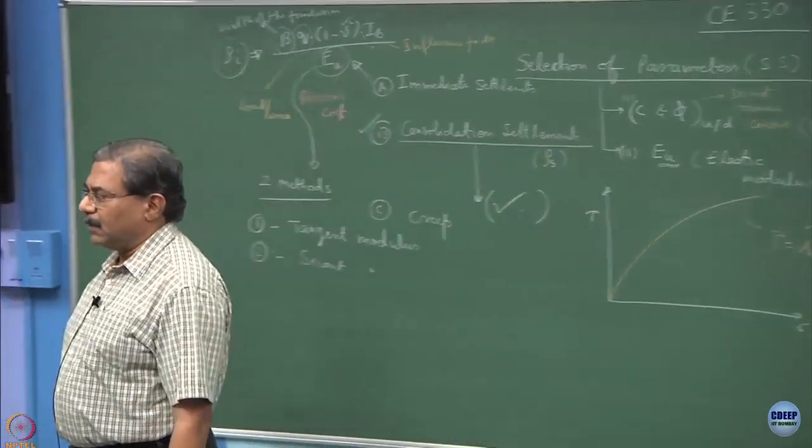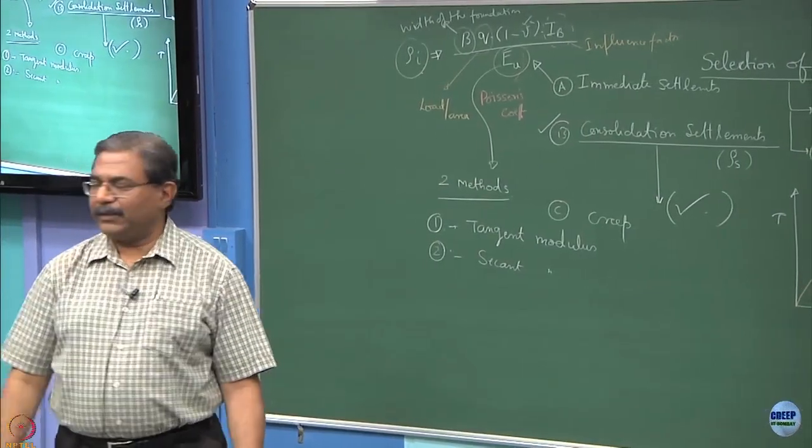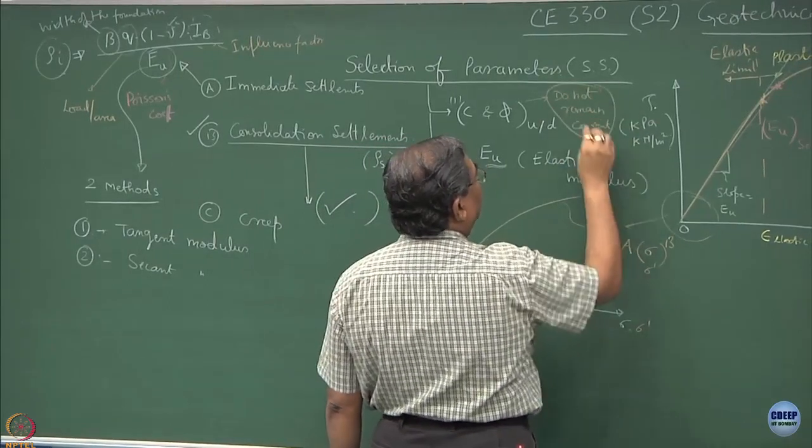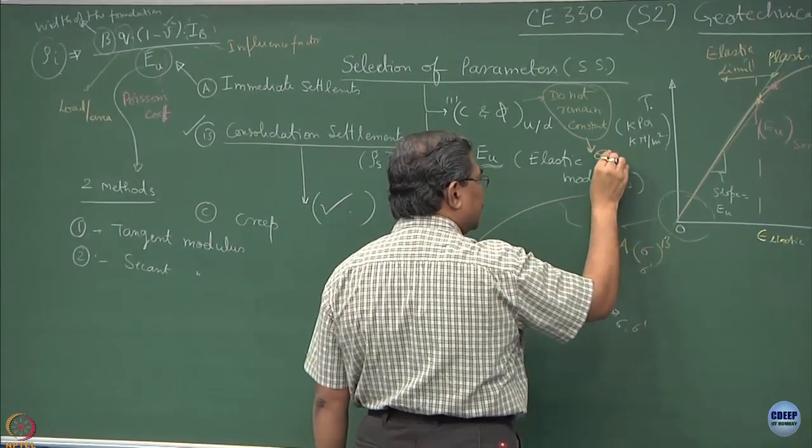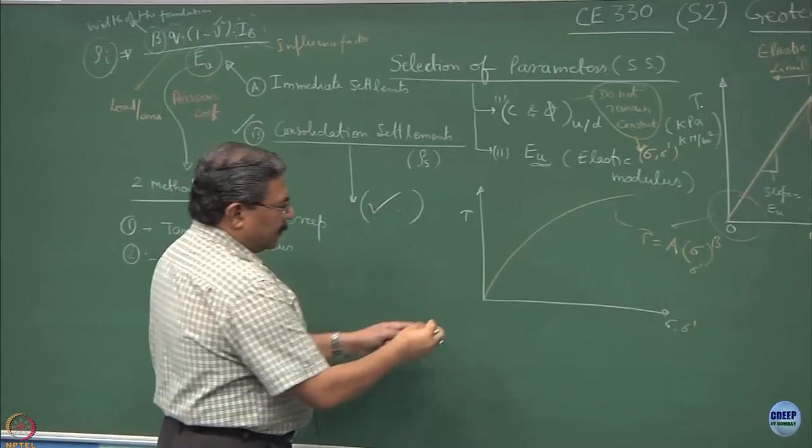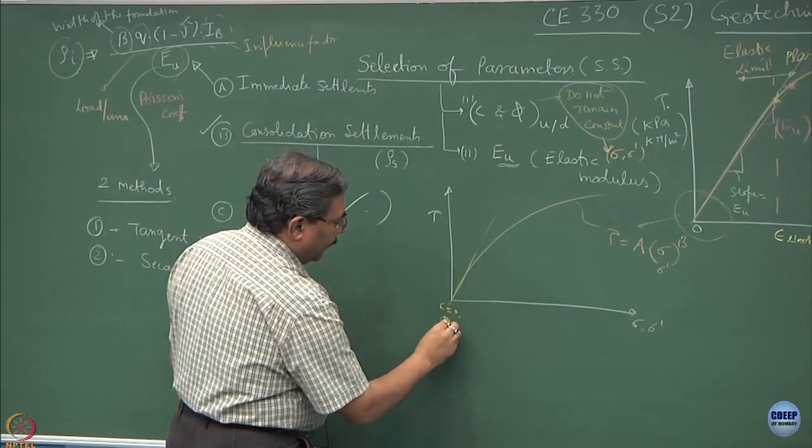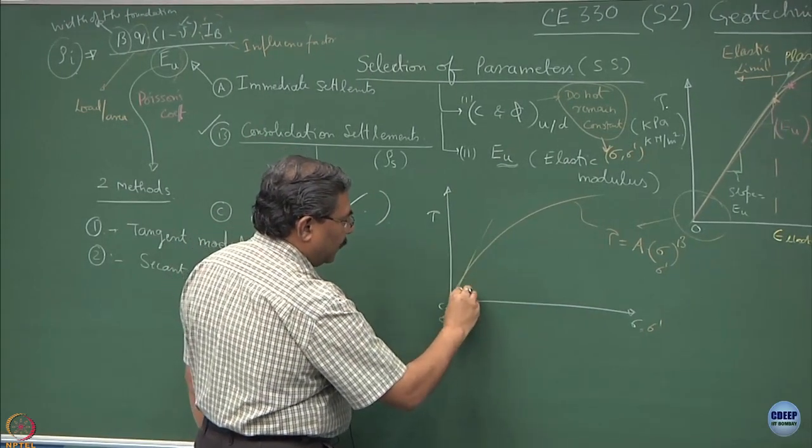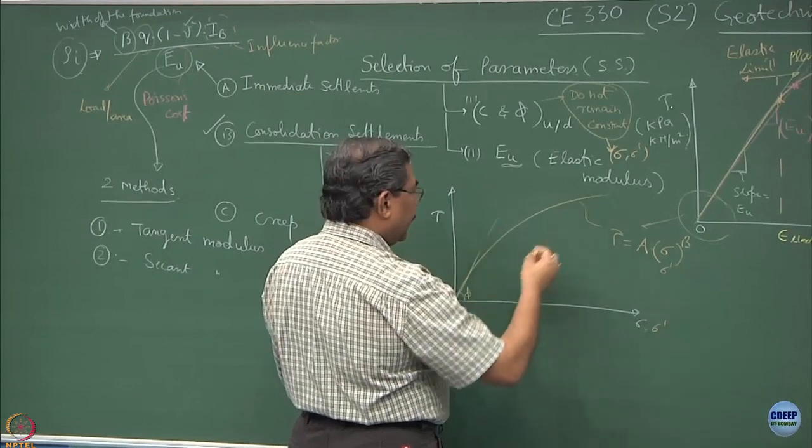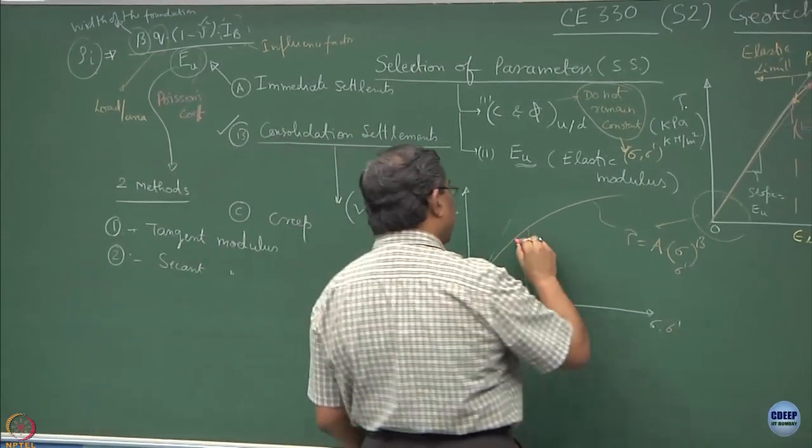There is nothing known as a constant c and phi value. C and phi do not remain constant. They depend upon the stress range in which you are working. C and phi are strongly dependent upon the range of stress. If I am working in very small ranges of confinement, this is valid: c is zero, phi equals whatever you have got from the slope of this line. But as the confinement increases, the nature of the graph is non-linear. Within this range of normal stress, if you draw a tangent over here, this is going to be the c value and phi_1 value, c_1 and phi_1.